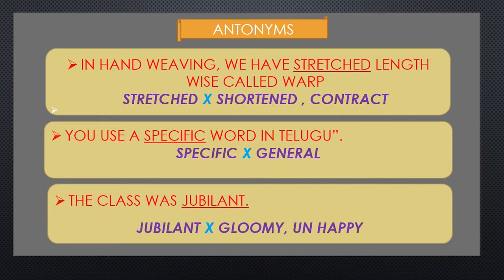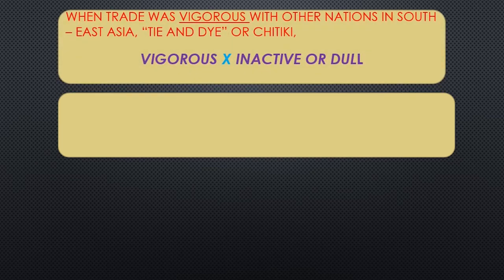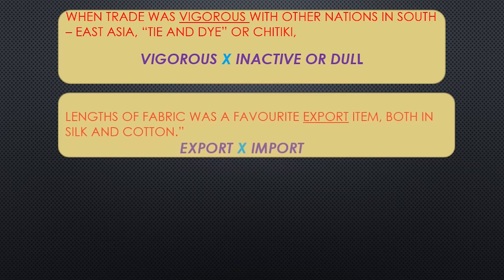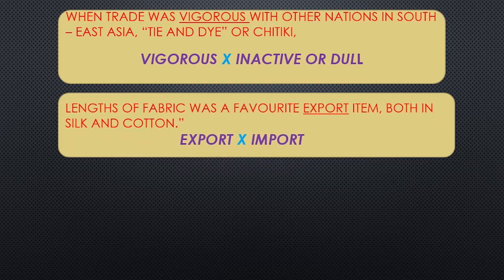The class was jubilant — the opposite of jubilant is gloomy or unhappy. When trade was vigorous with other nations in South East Asia — the underlined word is 'vigorous.' The opposite of vigorous is inactive or dull. Fabric was a favorite export item — the underlined word is 'export.' The opposite of export is import.